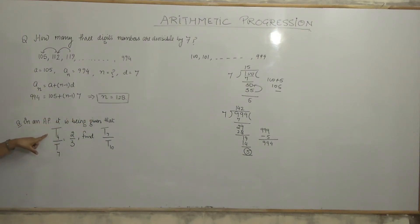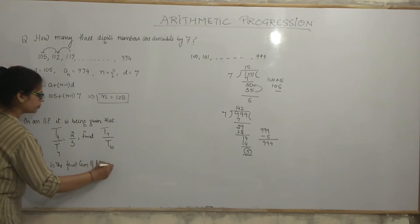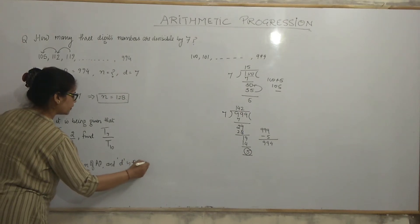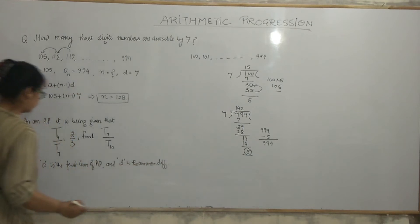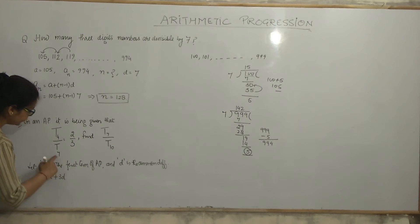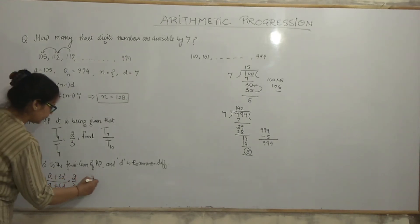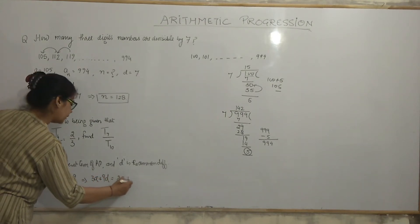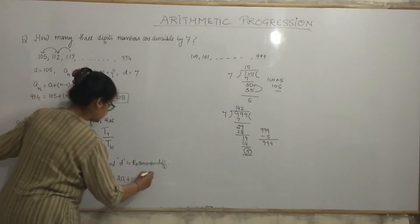Now, moving to the next question. In an AP, it has been given that t4 upon t7 is equal to 2 by 3. Find out t7 by t10. You might be thinking that a ratio is given and again a ratio is asked. No problem. If a ratio is given, then we find the relation between two variables, a and d. How come? Look. Let a is the first term of AP and d is the common difference.